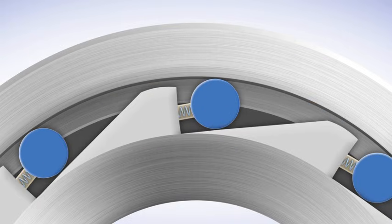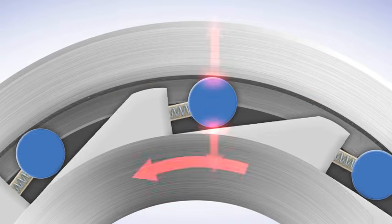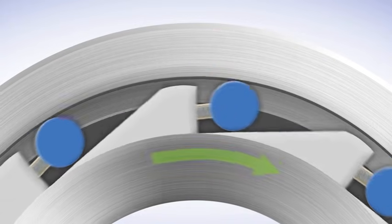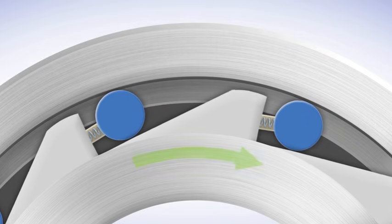Any movement in the opposite direction causes the rollers to lock against the outer race and inner race ramp to prevent any reverse rotation.